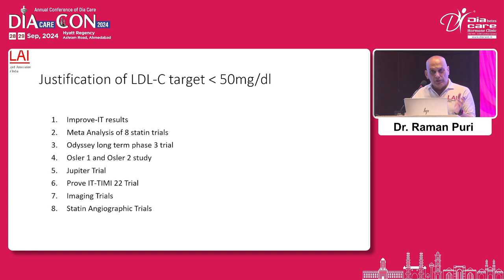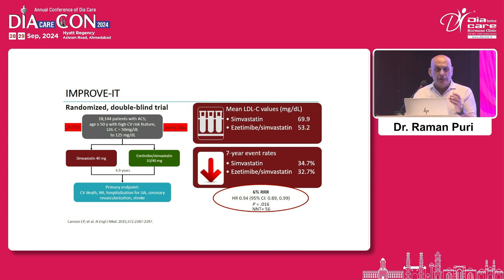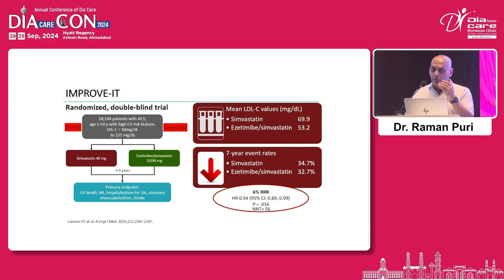The most important trial was the IMPROVE-IT trial — a post-ACS trial where about 27% of patients had underlying diabetes. It was found that when LDL cholesterol was reduced from 69 to around 53 mg, there was a 6% reduction in cardiovascular events.